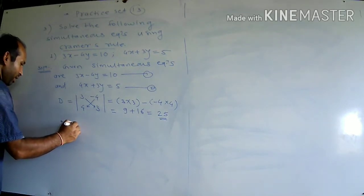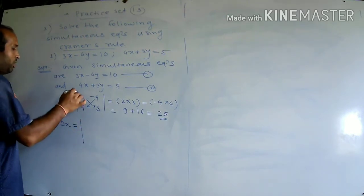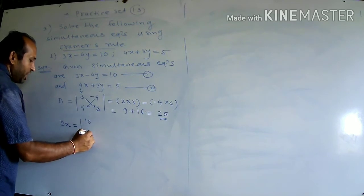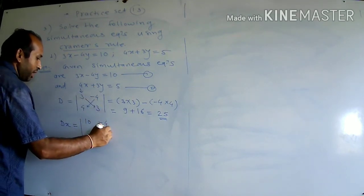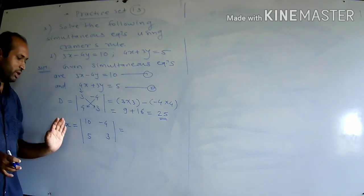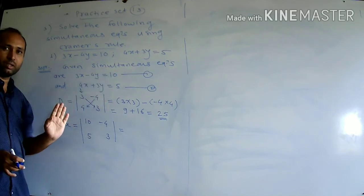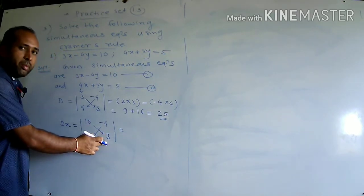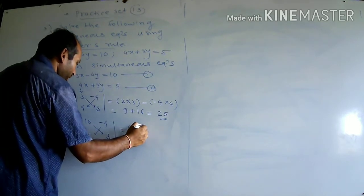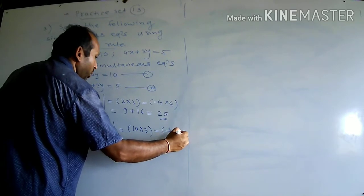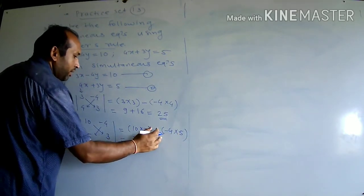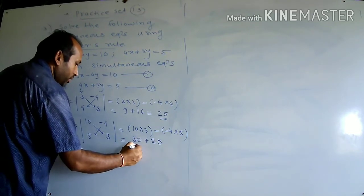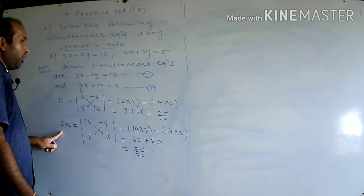For DX: replace the first column with constants 10, 5; second column minus 4, 3 remains as is. Value: 10 into 3 minus (minus 4 into 5) = 30 plus 20 = 50. This is the value of DX.